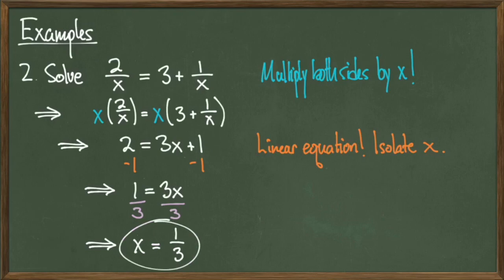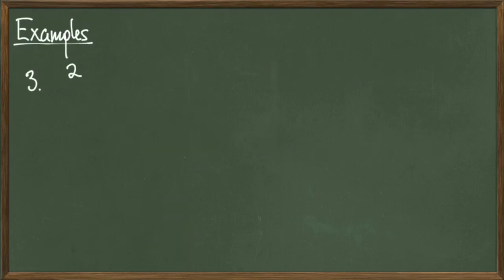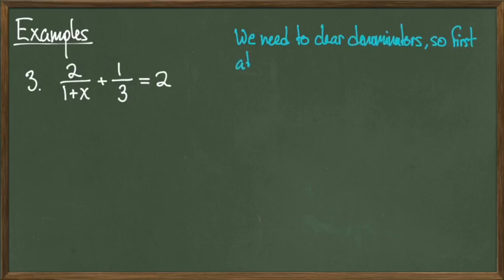Let's look at some harder examples. Consider the equation 2 over 1 plus x plus 1 third equals 2. My left-hand side has a lot going on here, so I should think about simplifying it before I proceed. By simplifying, I mean add the fractions together. To do this, I need to find a common denominator.